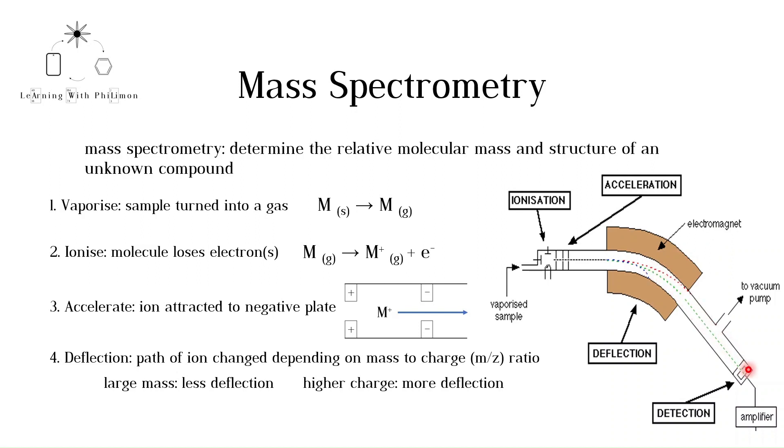The fifth step is detection. When the charged molecule strikes the detector, an electrical current is produced, which is proportional to the abundance of the ion. The more ions with that mass-to-charge ratio, the larger the current produced.